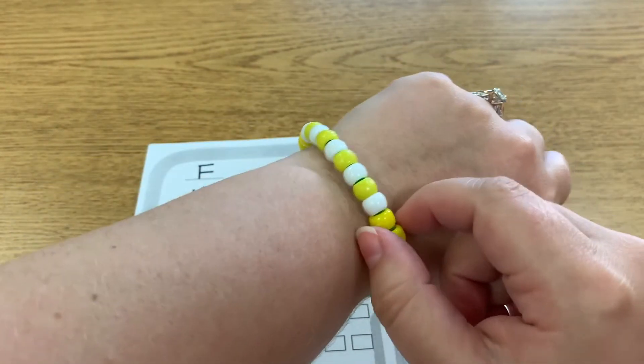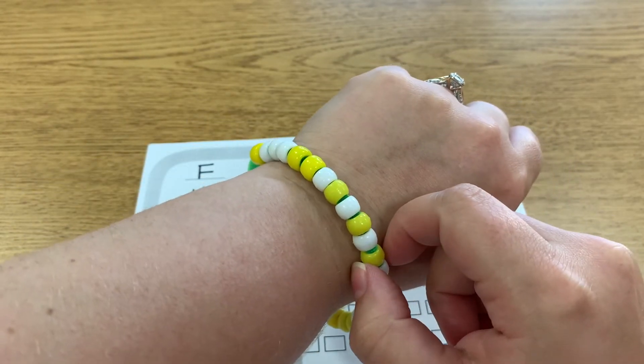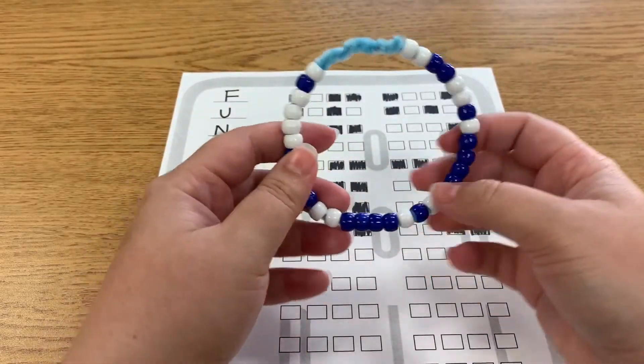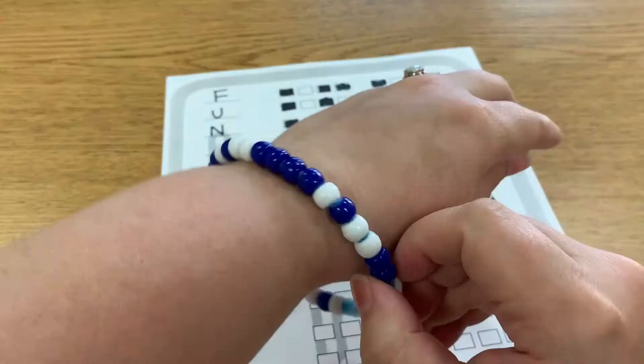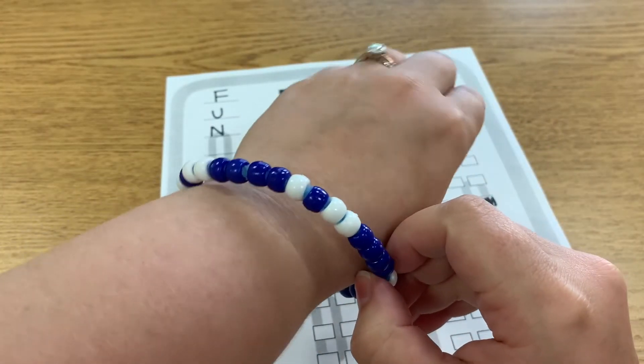And there you have it, a binary code bracelet that only you can read. But don't stop there, you can spell other words. For this one, I spelled the word cool.